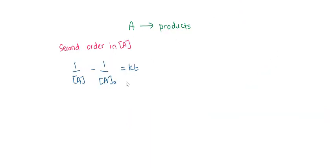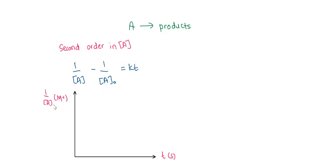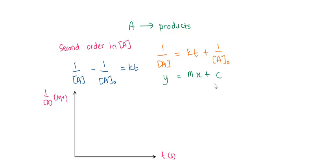The integrated rate equation for the second order reaction is: 1 over [A] minus 1 over [A₀] equals Kt. To plot a linear graph, rearrange so that 1 over [A] is the Y-axis and T is the X-axis. The gradient equals K — giving a linear graph with a positive slope, where gradient equals K. So if you plot 1/[A] versus time and get a straight line, it means the reaction is second order.